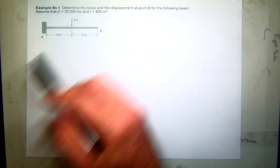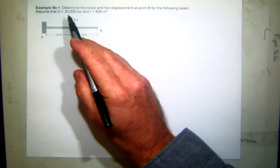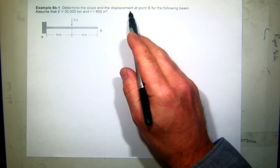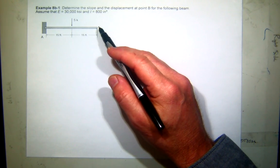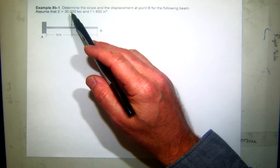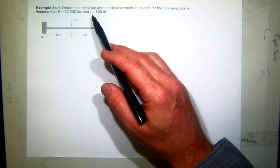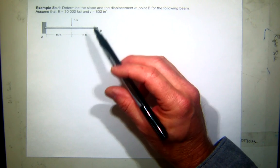Okay, so this is going to be our first problem working conjugate beam. This particular problem wants you to find the slope and displacement at B, which is the free end. We also have a value for E, which is pretty close to steel, and an I value moment of inertia of 800 inches to the fourth.